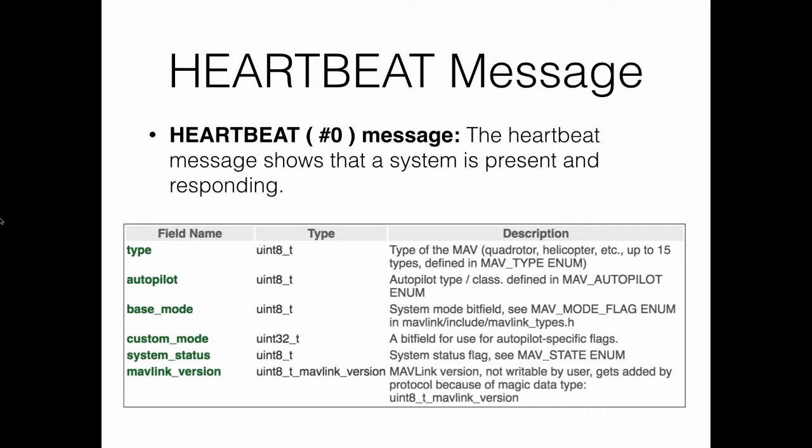The base mode and the custom mode together define the operational mode. If the custom mode is enabled in the base mode, we look at the custom mode flags: if it is 0, it's stabilized mode; if it is 4, it is guided mode, and so on. The system status field represents a flag indicating the state of the system — for example, 4 indicates the vehicle is active, 5 indicates a critical state, 2 indicates calibrating, 1 indicates booting, and 3 indicates standby.